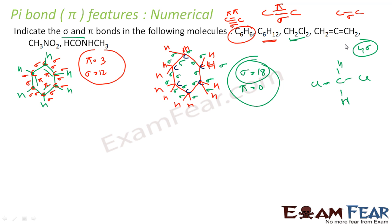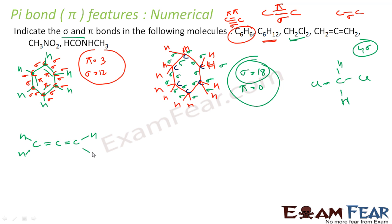Let's take CH2=C=CH2. The structure is CH2 double-bond carbon double-bond CH2. Counting the bonds: each C-H is one sigma, and since there are two double bonds there are also two pi bonds. The total is 6 sigma bonds and 2 pi bonds.